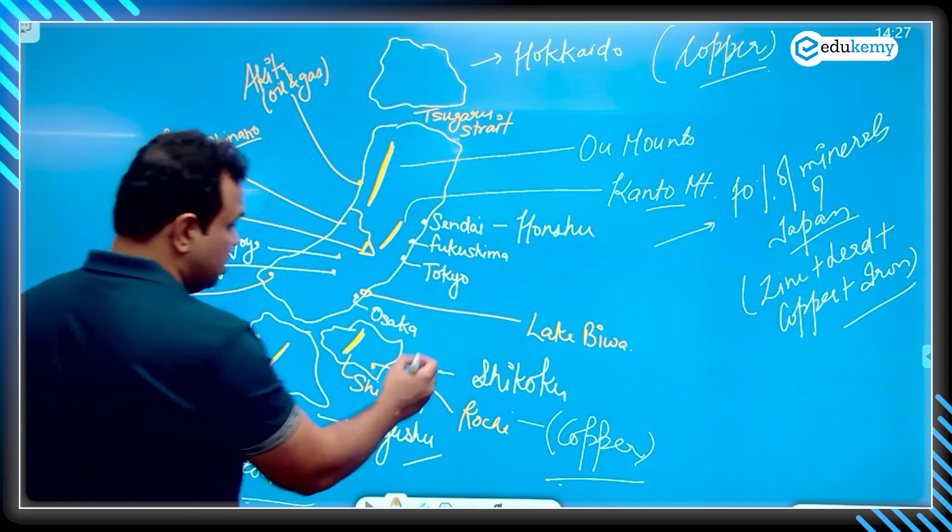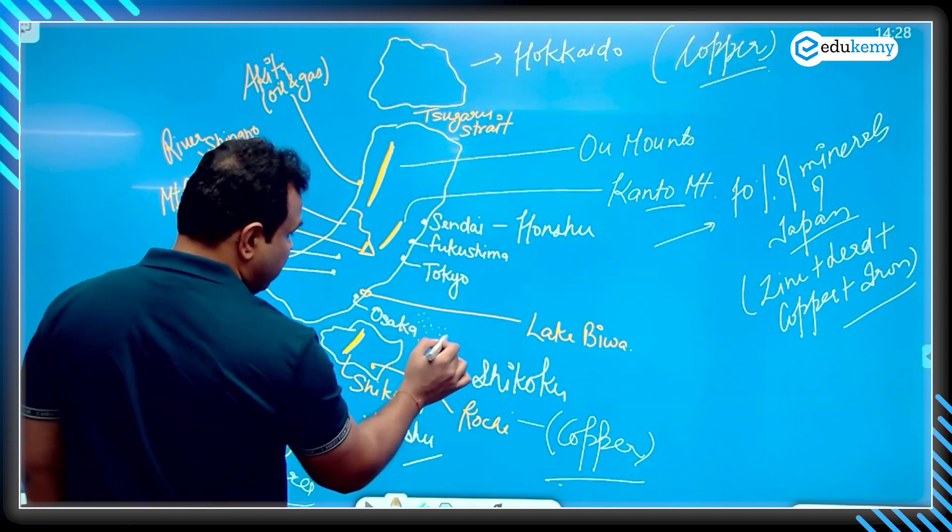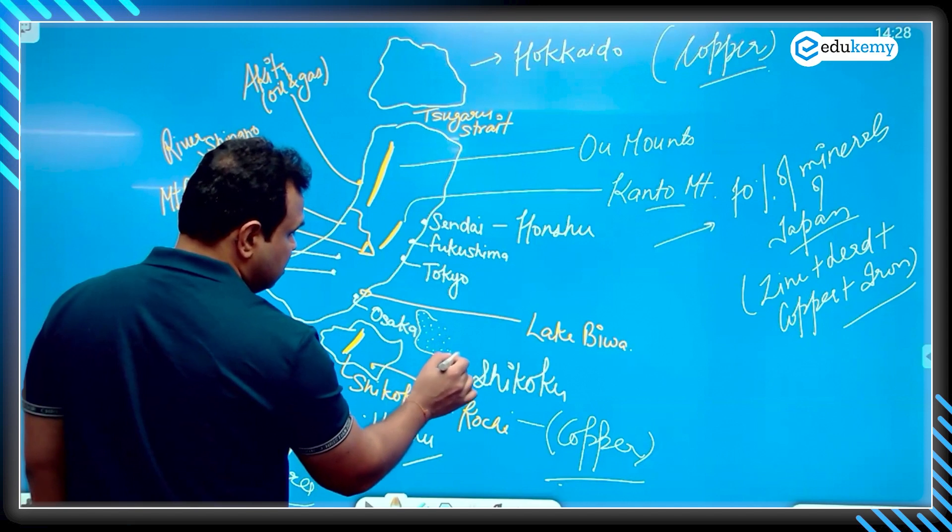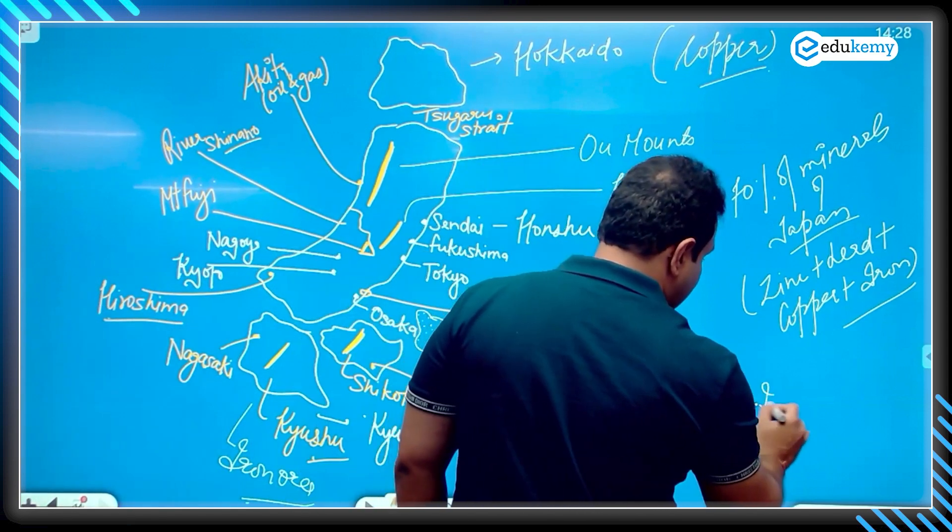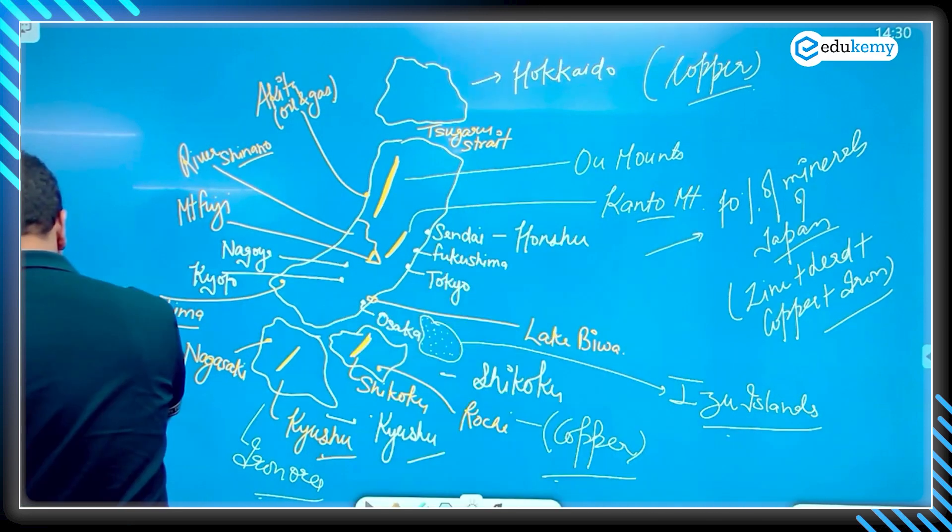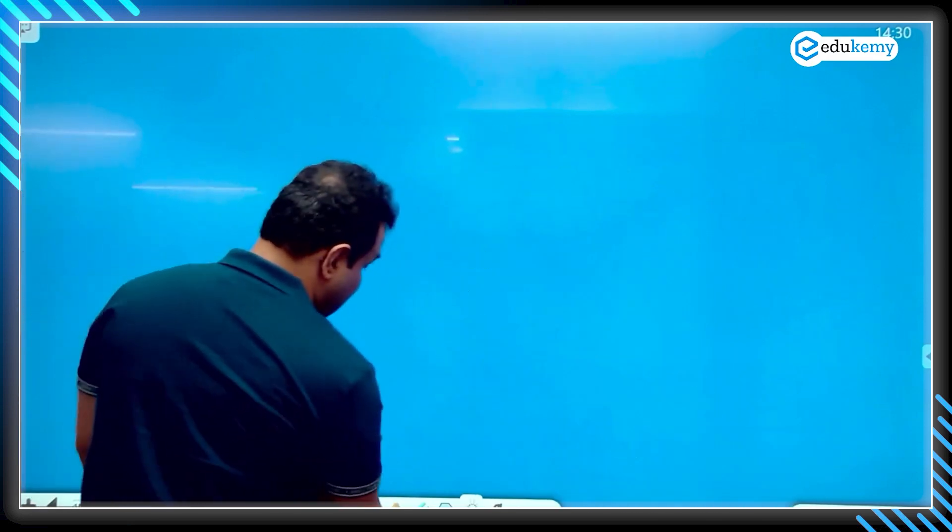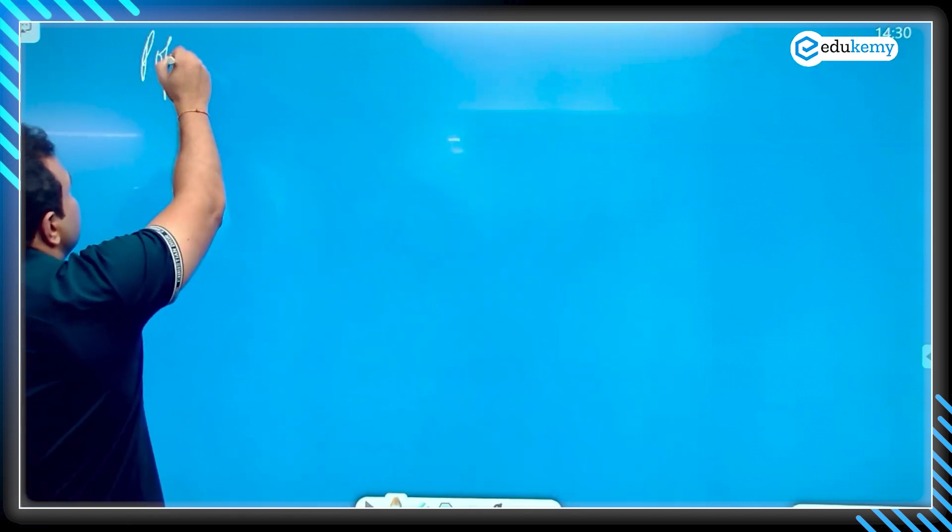Here we have some small islands within the administrative control of Japan. These are called Izu islands, Izu archipelago.